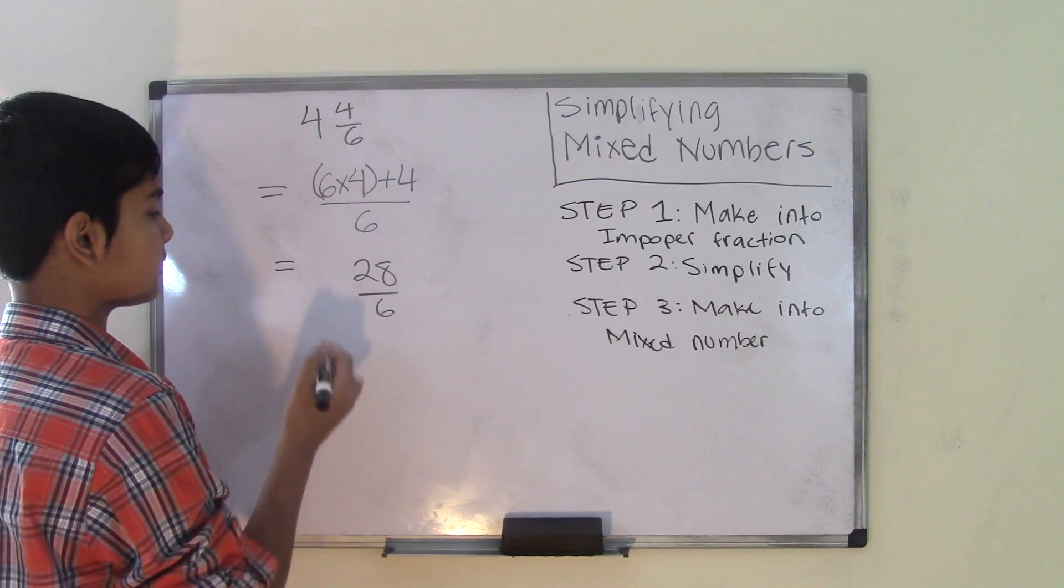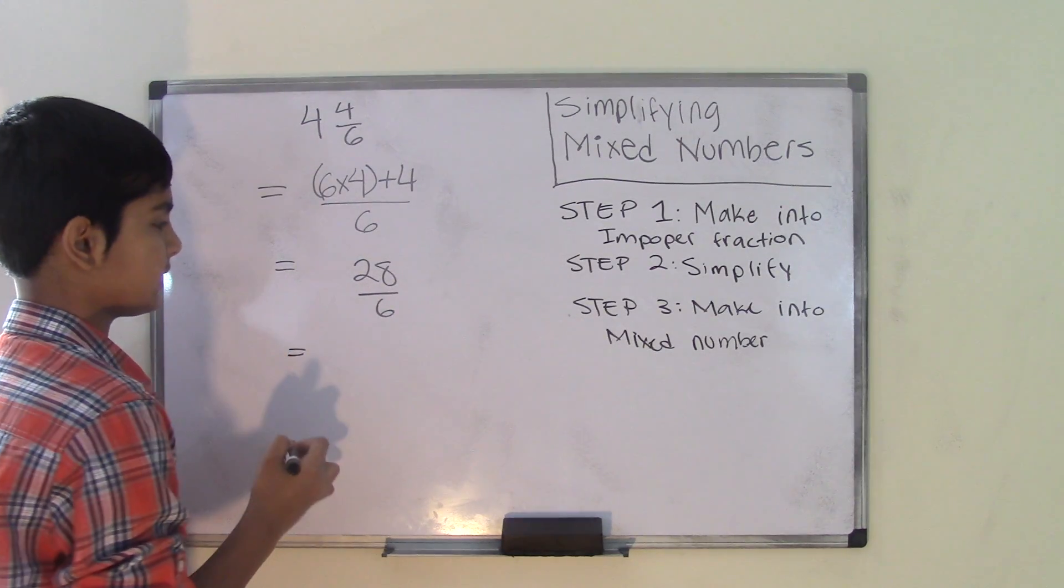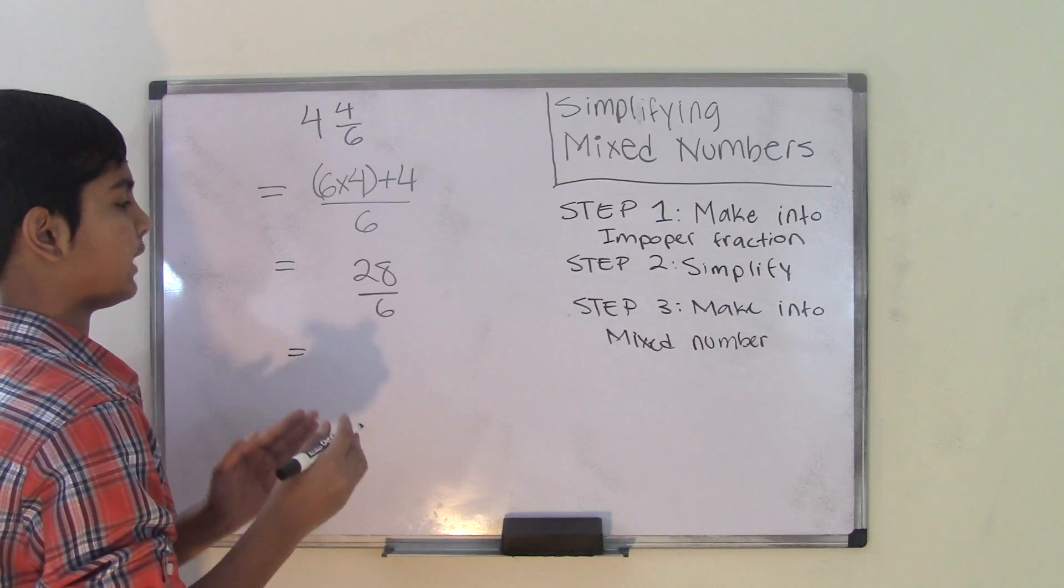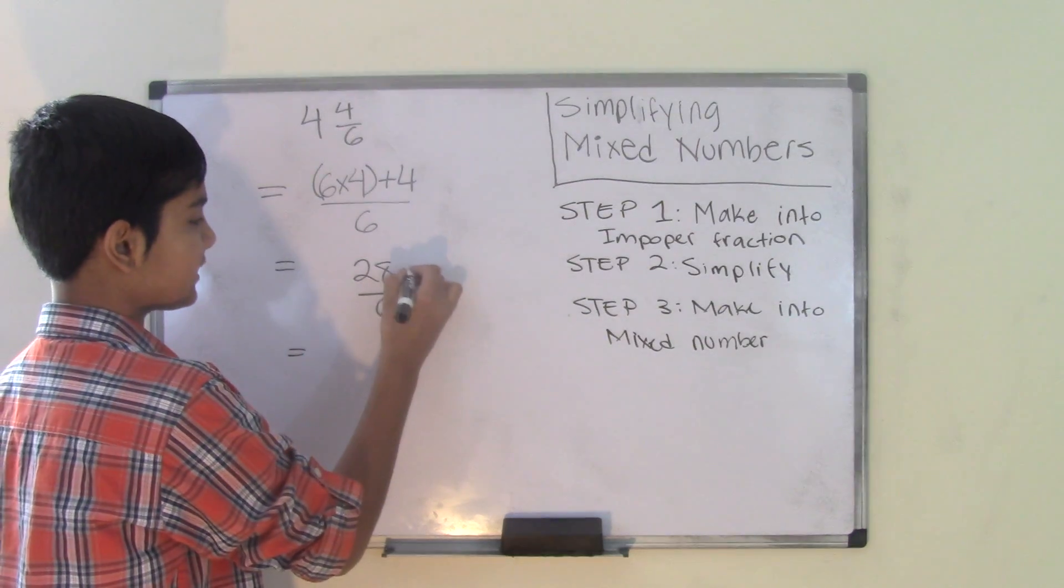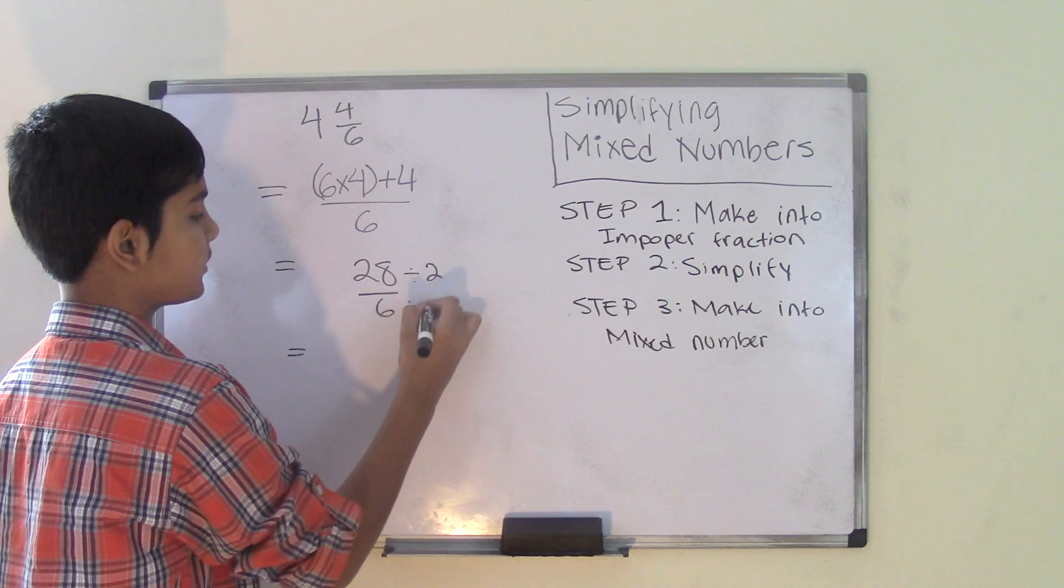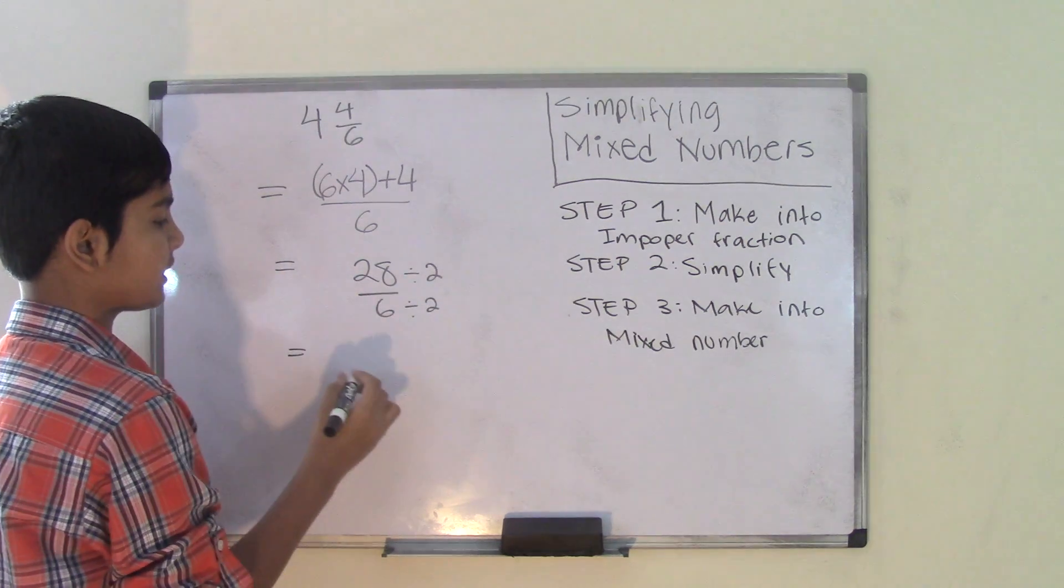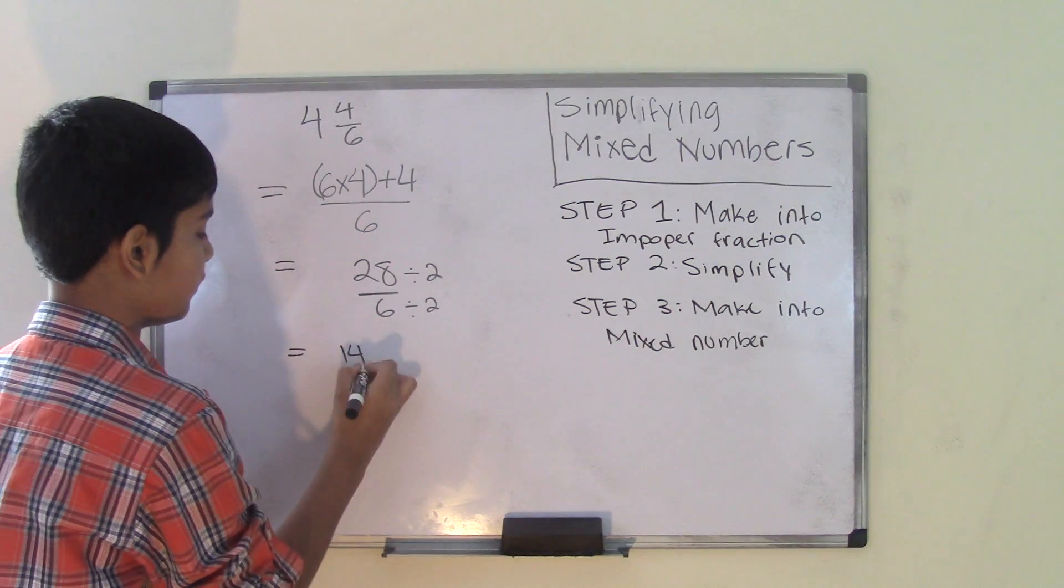Now step number 2 is to simplify this improper fraction. To simplify this, we need to divide both of the numbers. So 28 divided by 2 and 6 divided by 2, which gives us 14 over 3.